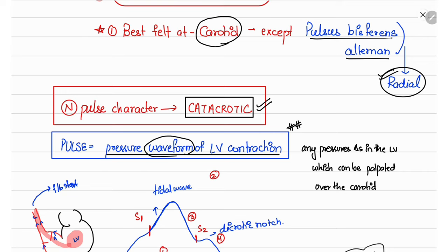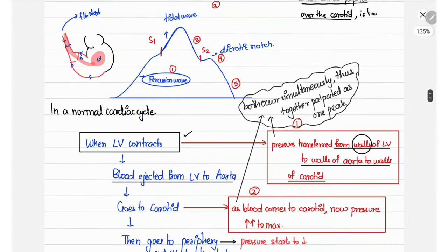The basic concept you need to know while discussing pulse character is that the pulse is the pressure waveform of left ventricular contraction — any pressure changes in the left ventricle that can be palpated over the carotid. Normally, when the left ventricle contracts, pressure from the left ventricular walls transmits along to the aortic walls and then to the carotid walls.